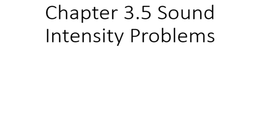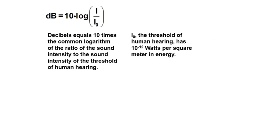Chapter 3.5, Sound Intensity Problems. This section has to do with logarithmic relations, such as the acidic-base relation using pH with litmus tests, and earthquake intensity on the Richter scale. In this case, we have our formula for sound intensity. Decibels is measured and defined as 10 times the common logarithm — log base 10 — of the ratio of the sound intensity in watts per meter squared over the threshold of hearing, which is defined to be 10 to the negative 12 watts per square meter.